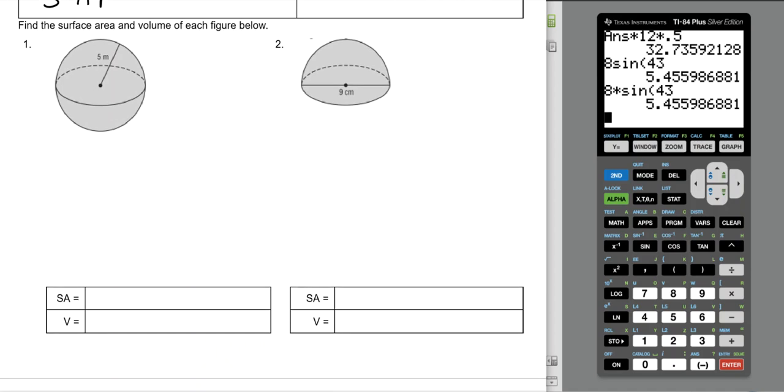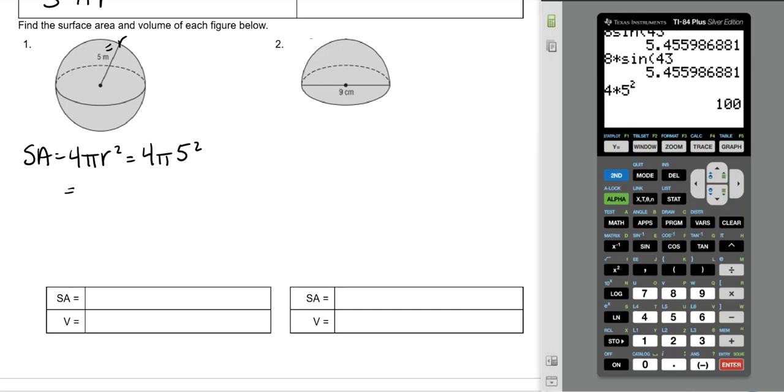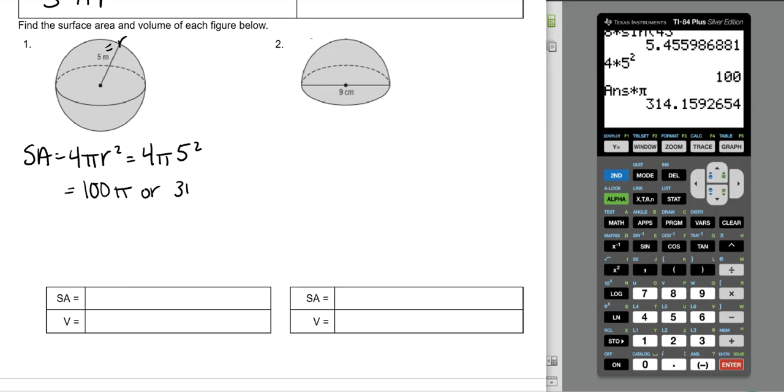Now let's do some practice. Our radius is 5. The surface area is 4πr². So 4π(5²). If I do 4 times 5 squared, I get 100π. That's my exact answer. To round it, it's 314.16 square meters, because surface area is two-dimensional.